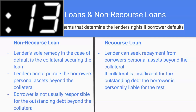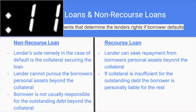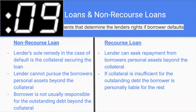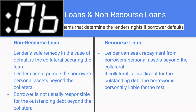If you're having trouble remembering which is which, switch the word recourse for punishment. Non-punishment loan equals not personally liable. Punishment loan equals personally liable.